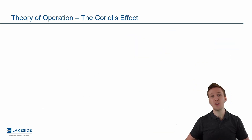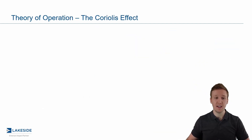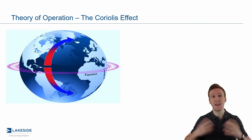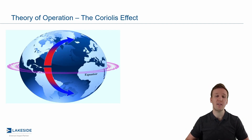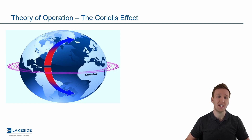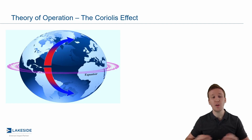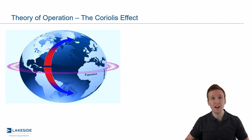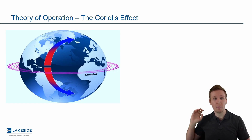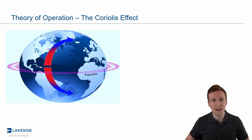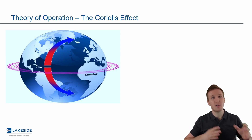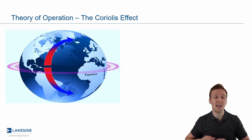To do this we have to understand what the Coriolis effect is. On a grand scale, if we look at Earth, it has to do with the fact that Earth is constantly rotating. If you were standing at the equator and threw a ball to your friend in North America, that ball would travel to the right.